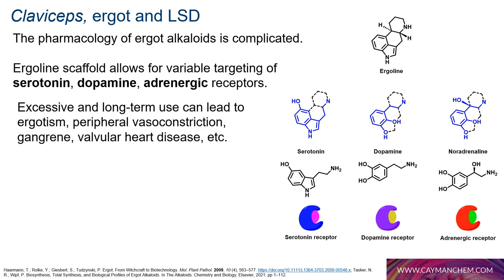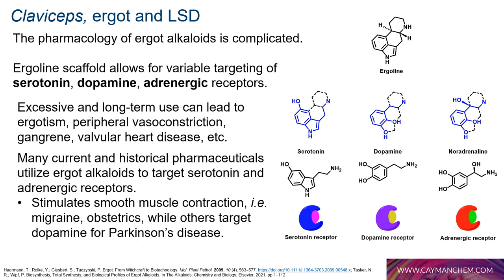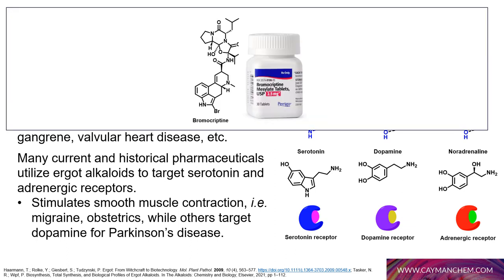Ergot alkaloids stimulate smooth muscle contractions and when used in excess can lead to valvular heart disease and ergotism — a condition where blood vessels constrict to the point where blood can no longer flow, potentially leading to necrosis and death. However, singular alkaloids dosed appropriately have been used in modern medicine to treat conditions such as migraine and postpartum hemorrhage. For instance, the dopamine agonism of bromocriptine is used alongside L-DOPA to treat Parkinson's disease.